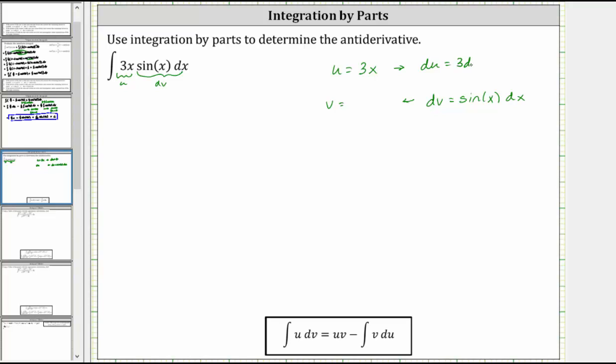Now we integrate both sides of this equation to determine v. Let's go ahead and show the work. Integrating both sides of the equation, we have the integral of 1 dv is equal to the integral of sin(x) dx.